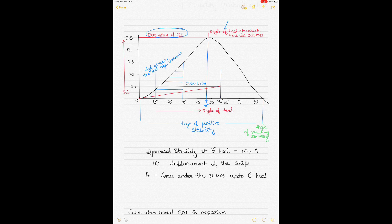Then you have the range of positive stability. This is from the curve from 0 degrees to the angle of vanishing stability, where the GZ again becomes zero. So starting from 0 to the point that the GZ again becomes 0 is the range of positive stability, and the area under that curve represents it. The angle of vanishing stability is the angle at which GZ again becomes 0, and it also determines the range of positive stability the ship has. In cases where the ship is initially unstable, it will not start from 0 degrees but from some other value.